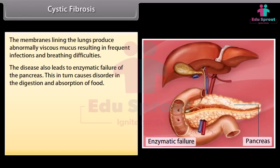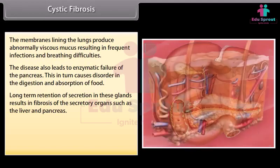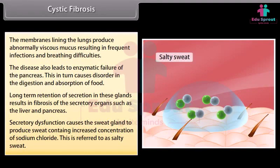The disease also leads to enzymatic failure of the pancreas, causing disorder in the digestion and absorption of food. Long-term retention of secretions in these glands results in fibrosis of secretory organs such as the liver and pancreas. Secretory dysfunction causes the sweat glands to produce sweat containing increased concentration of sodium chloride, referred to as salty sweat.